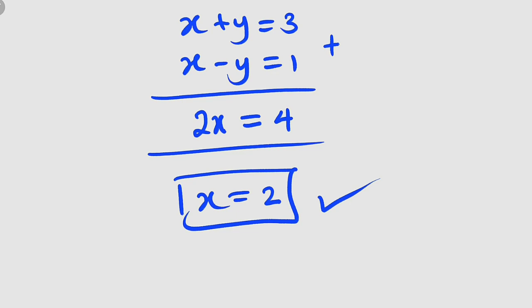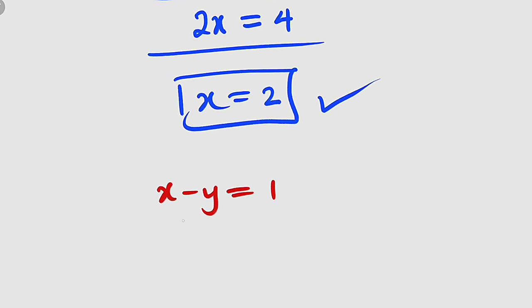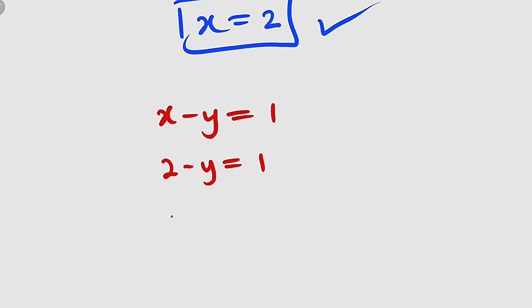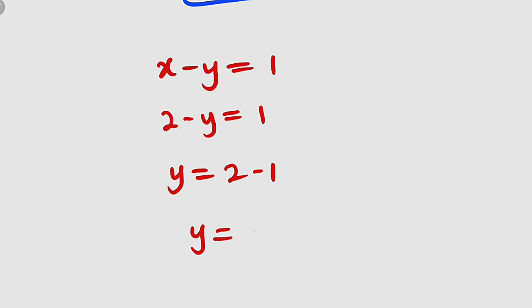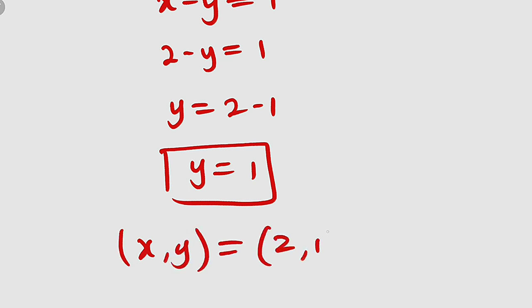Now for the value of y, we plug x equal to 2 into equation number 4. In equation number 4, we have x minus y equal to 1, where x is equal to 2. So we have 2 minus y equal to 1, which means y is equal to 2 minus 1, and finally y equals 1. So x equals 2 and y equals 1, respectively.